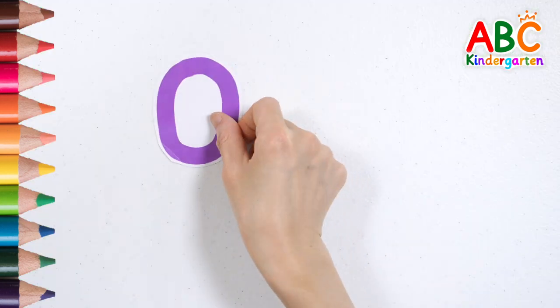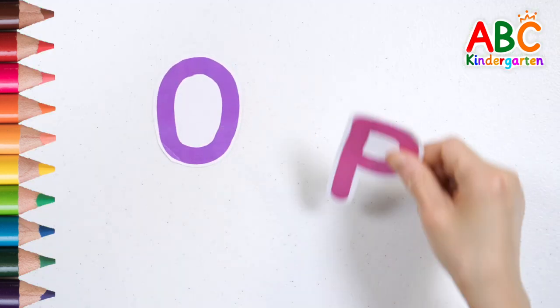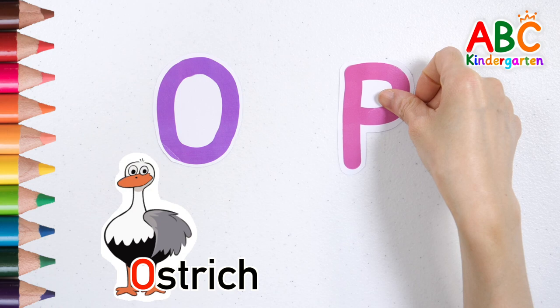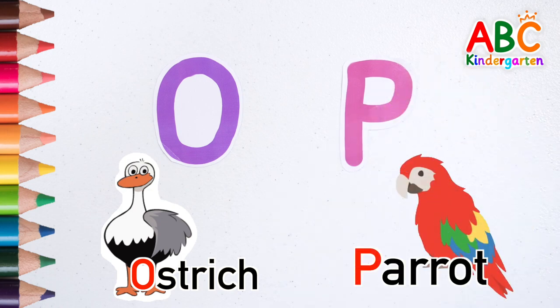Today we learned the alphabet. O — Ostrich. P — Parrot. Great job!